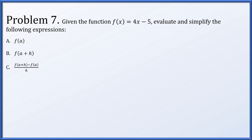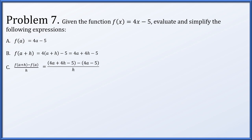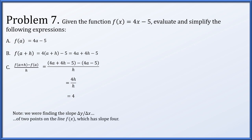In problem 7, for f(x) = 4x - 5, evaluate f(a), f(a+h), and [f(a+h) - f(a)] / h. f(a) = 4a - 5. f(a+h) = 4(a+h) - 5 = 4a + 4h - 5. For the difference quotient, subtracting f(a) from f(a+h) — using parentheses to avoid distribution errors — the 4a and -5 terms cancel, leaving 4h over h, which simplifies to 4. This makes sense: f(x) is a line of slope 4, so the slope between any two points on it is also 4.